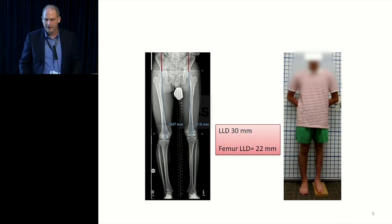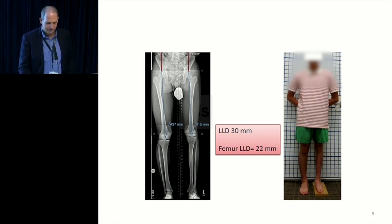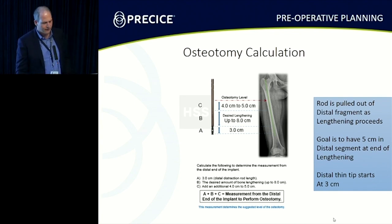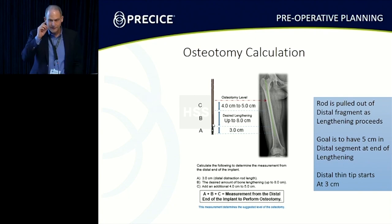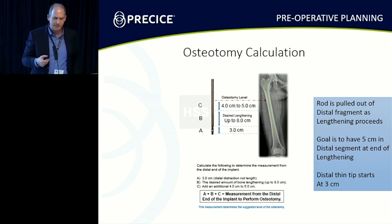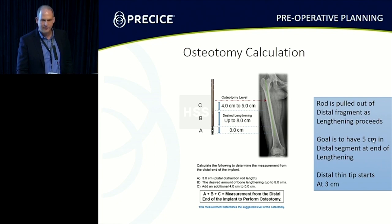I'll use this as an example about some basic principles about choosing nail length. Here's a patient who has a leg length discrepancy of 30 millimeters. When you're using the internal lengthening nail, it's a telescopic nail, and the end has a male end sticking out. As you're lengthening, the goal is to make sure you have the thick part of the nail in the distal segment by at least four to five centimeters, because it gradually pulls out of that segment as you're doing the lengthening. The goal is to have five centimeters of thick nail.